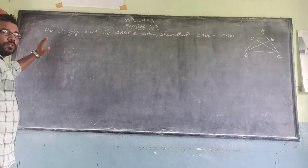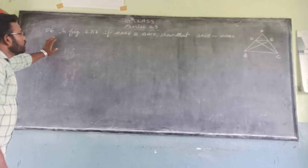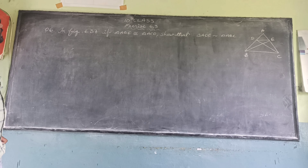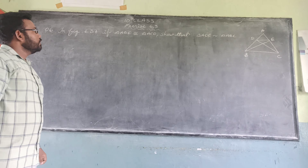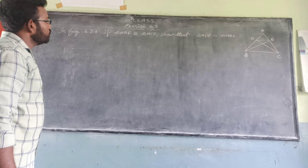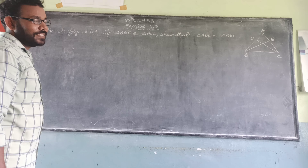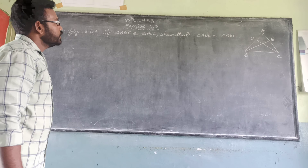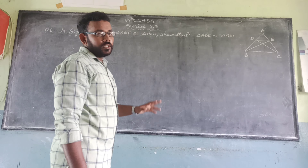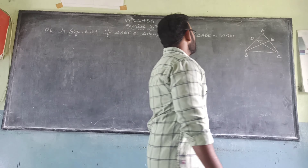The 6th question is: in figure 6.37, if triangle ABE is congruent to triangle ACD, show that triangle ADE is similar to triangle ABC.